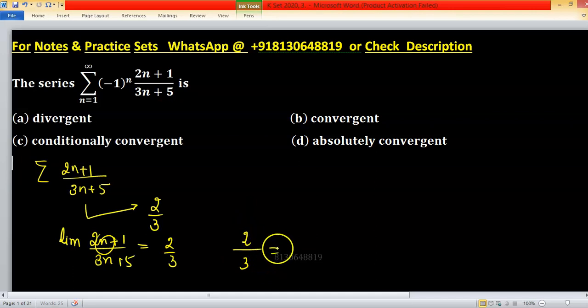Because 2 upon 3 not equals to 0, that's why this is not absolutely convergent.